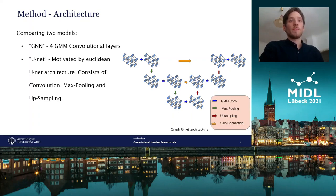The second model, referred to as UNET, is built of five convolutional layers. The first two are followed by a max pooling layer and the ReLU activation. The second two are followed by an upsampling layer and again by ReLU. After the final convolutional layer, a tanh activation function is applied.